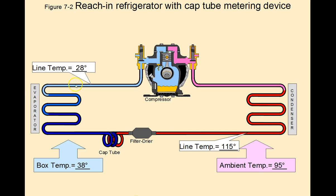So line temp of 28 degrees Fahrenheit, box temp of 38, ambient temperature of the air flowing across the condenser coil is 95, with a line temp of 115 degrees.